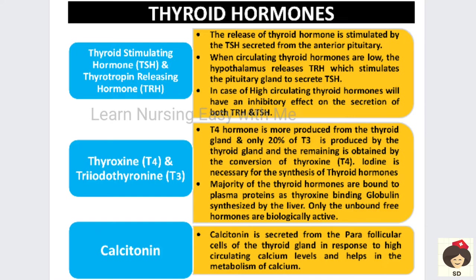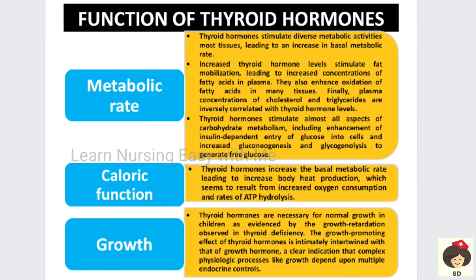Calcitonin is secreted from the parafollicular cells of the thyroid gland. It is secreted whenever circulating calcium levels are high. When blood calcium is very high, calcitonin is secreted, and it will metabolize the calcium and excrete it through the kidneys, so that the blood calcium level will become low.